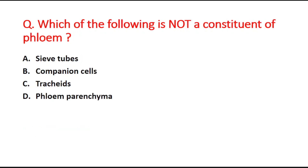Next question: which of the following is not a constituent of phloem? Option A is sieve tubes, option B is companion cells, option C is tracheids, and option D is phloem parenchyma. The right answer is option C, tracheids.